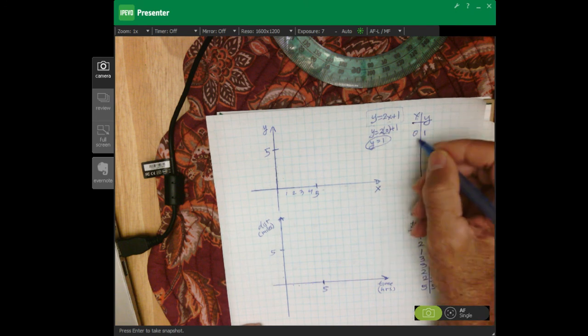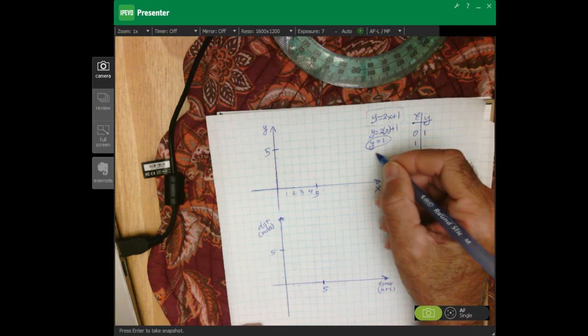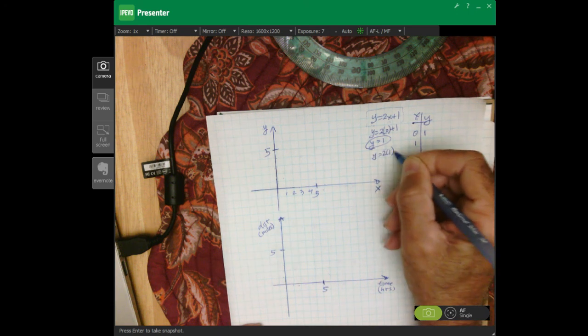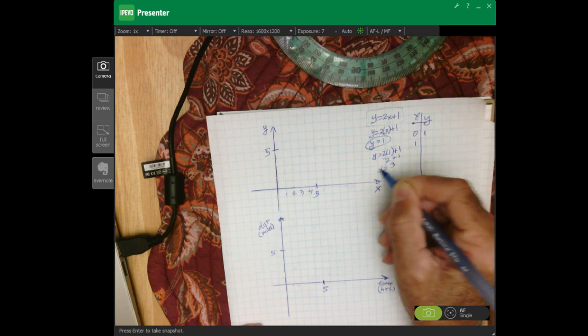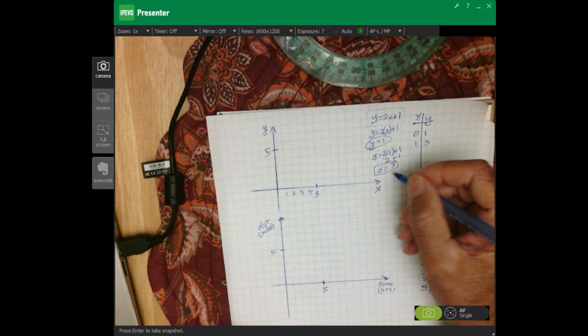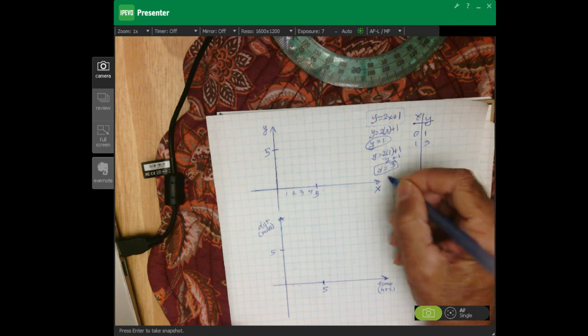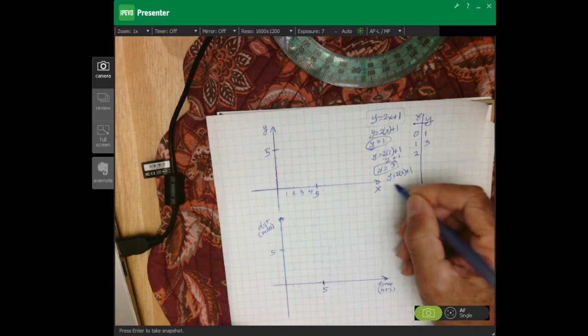So then we pick another point. Pick any point you want. It'll be on the line. So we have 2 times 1 plus 1. That's 2 plus 1 or 3. So when x is 1, y has to be 3. And then finally, we'll do one more. So y equals 2 times 2 plus 1. That's 4 plus 1. That'll be 5.